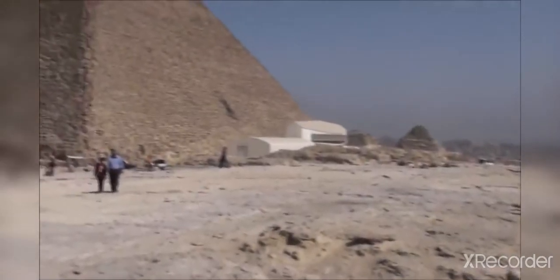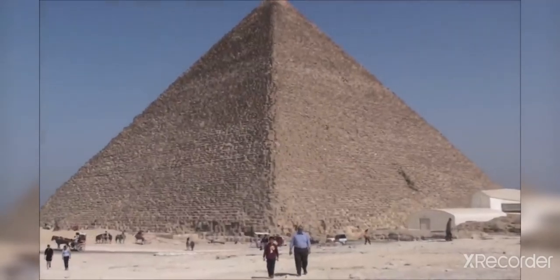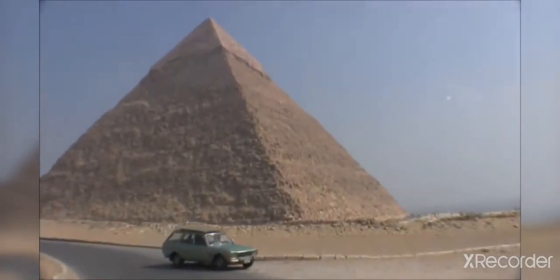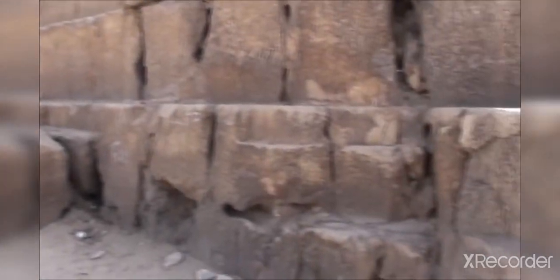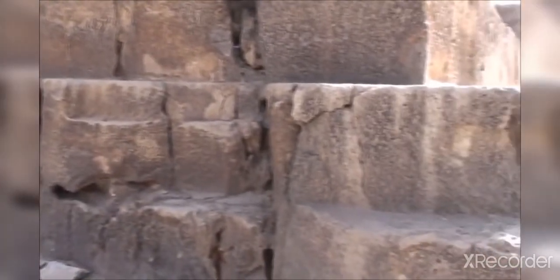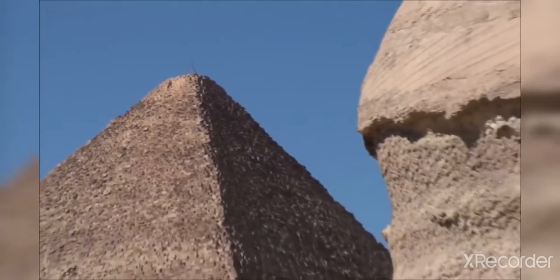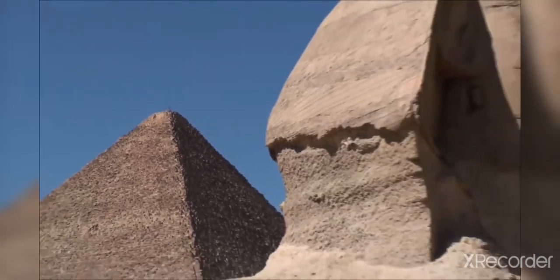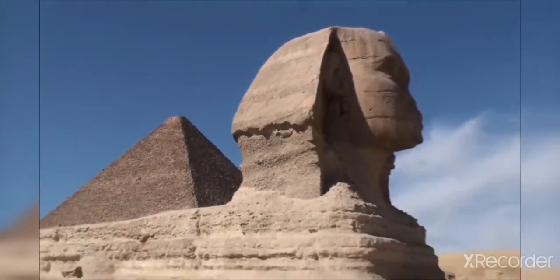Deep inside the pyramids lay burial chambers for the pharaoh's body and any treasures and items they would need for the afterlife. The pharaohs knew that their treasure would be desired by robbers, and so they tried to guard it. Sometimes they used fake burial chambers or hidden passages to try and keep thieves out, but unfortunately most of their treasures were stolen long ago.